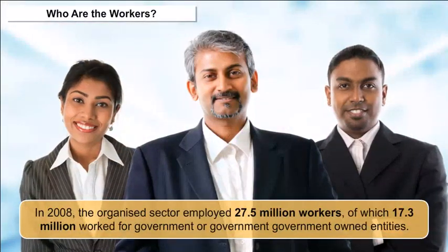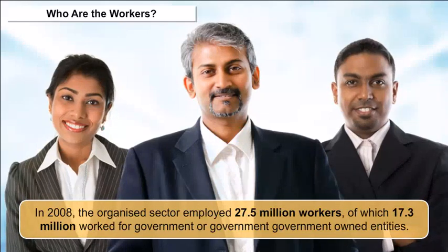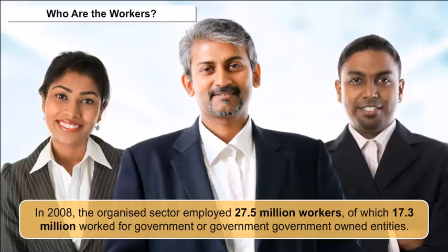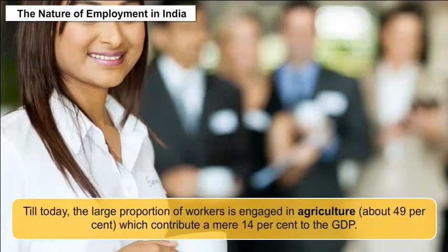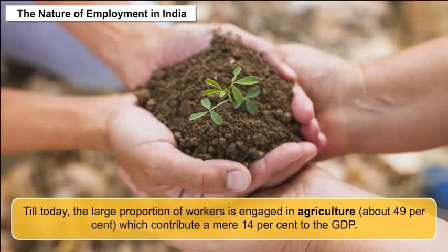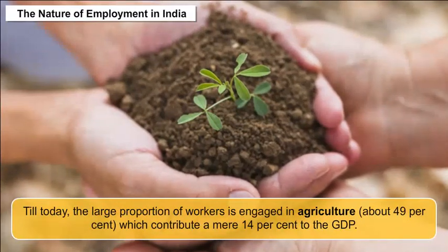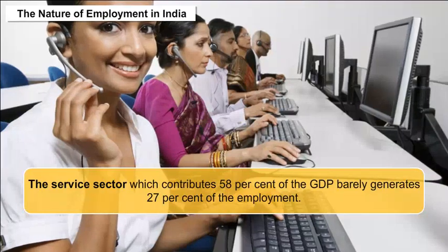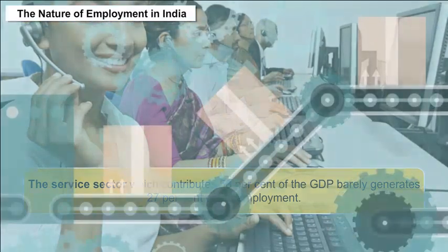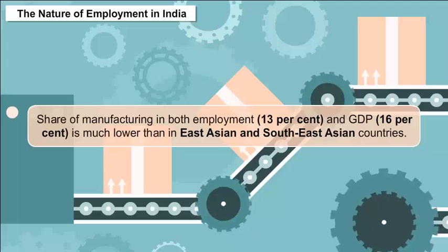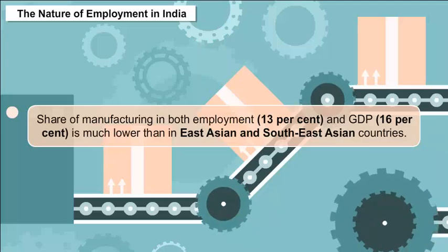In 2008, the organized sector employed 27.5 million workers, of which 17.3 million worked for government or government-owned entities. Today, a large proportion of workers — about 49% — is engaged in agriculture, which contributes a mere 14% to the GDP. In contrast, the service sector, which contributes 58% of GDP, barely generates 27% of employment. The share of manufacturing in both employment (13%) and GDP (16%) is much lower than in East Asian and Southeast Asian countries.